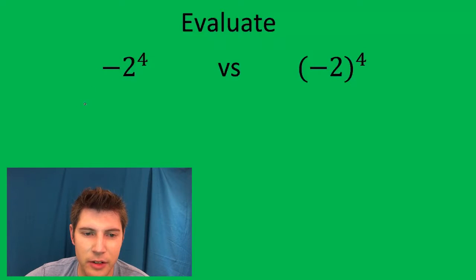So this one broken out is negative. And then you're going to do this exponent first, which is two times two times two times two.